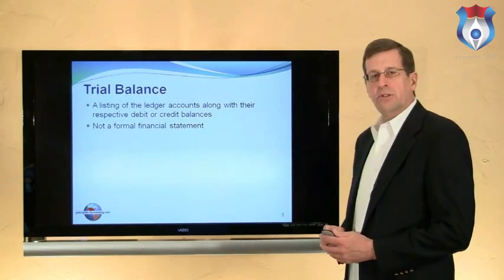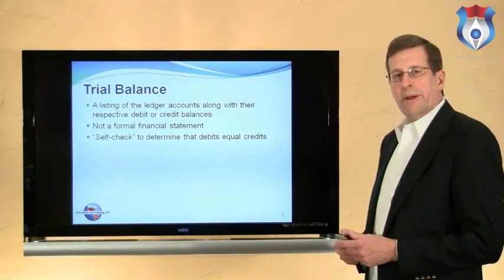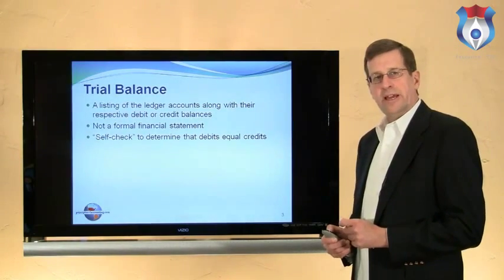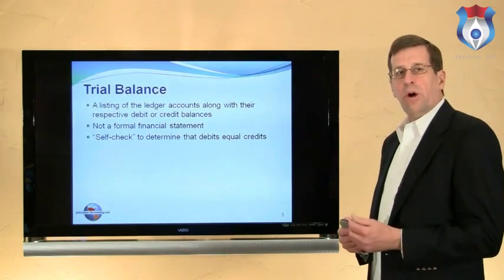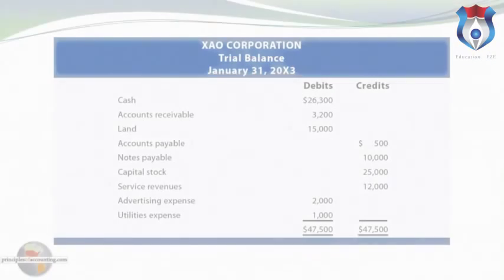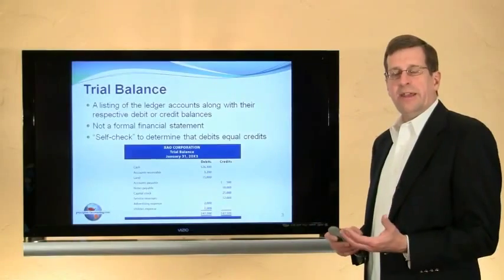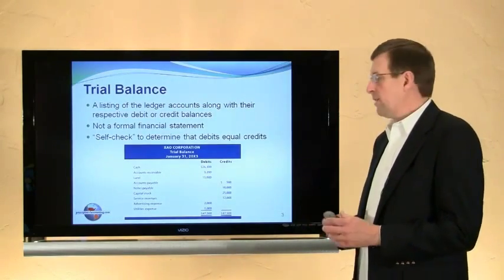Your accounts along with their respective debit or credit balances — it's primarily used as a self-check to determine that debits equal credits at any particular point in time. In an automated accounting system, a trial balance may not even be necessary, although one could be printed off. The trial balance for this particular company shows all of the accounts in use, along with their respective balances. Notice that total debits equal total credits.